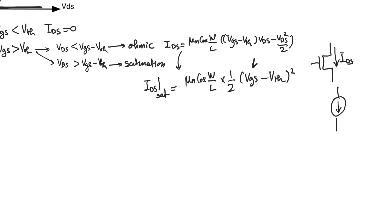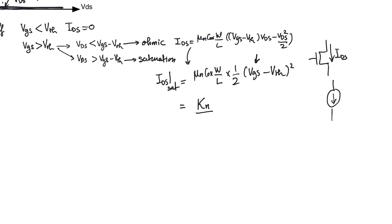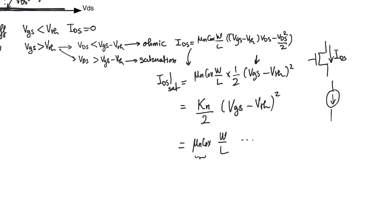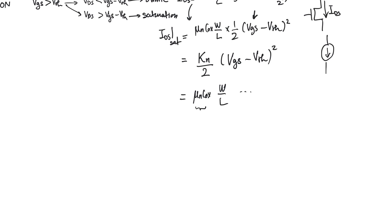Looking at the current expression — whether in saturation or ohmic — we give everything outside the bracket the symbol K. K includes all the constants in the equation and consists of two components: mu_N C_oxide, and W over L. The oxide capacitance per unit area, C_oxide, is controlled by oxide thickness, which is set by the fabrication process and beyond the designer's control. Mobility mu_N is also primarily a function of doping levels, also beyond the designer's control. However, W and L — the width and length of the transistor — are the main design parameters we have access to. So we divide K into K-prime (mu_N and C_oxide, process-controlled) and W over L, the aspect ratio, which is our main design parameter.